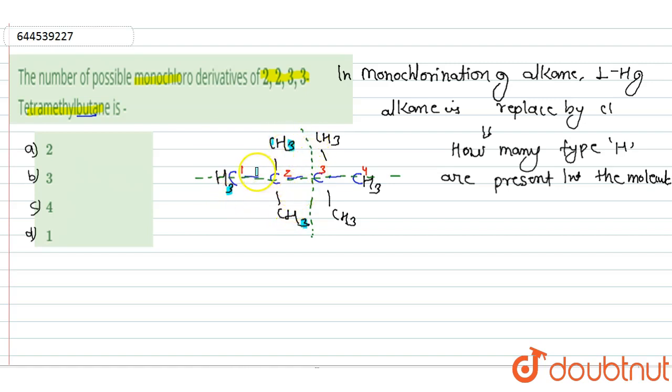And this is the plane of symmetry means above this plane and this side of this plane, they all are equivalent position. Means these hydrogens are also equivalent to each other. Means they all hydrogen are equivalent in position. Means only one type hydrogen are present in this molecule.